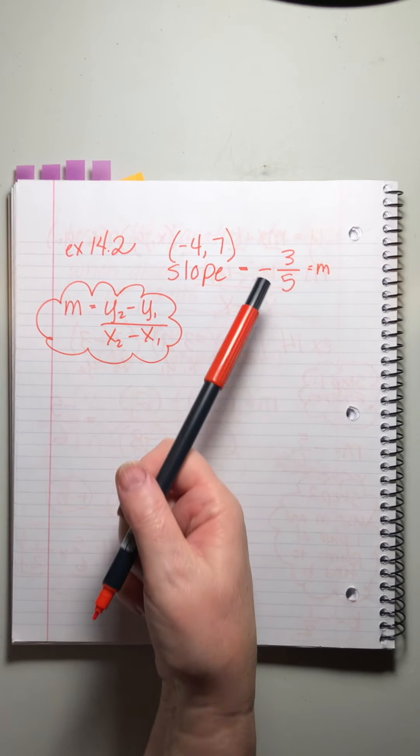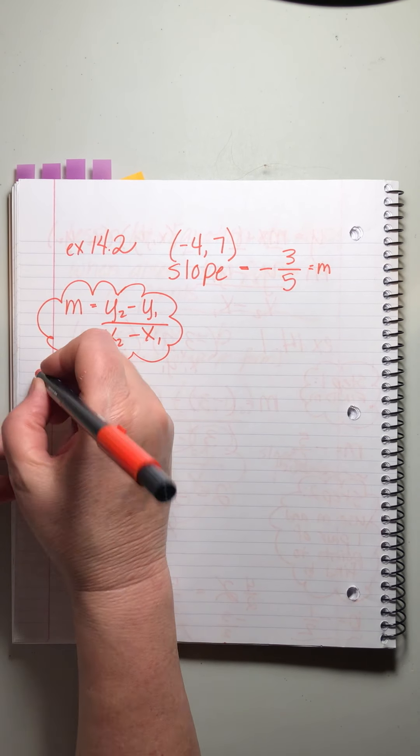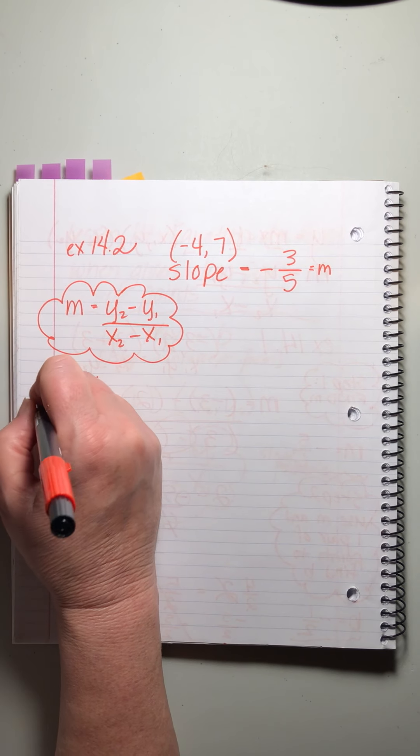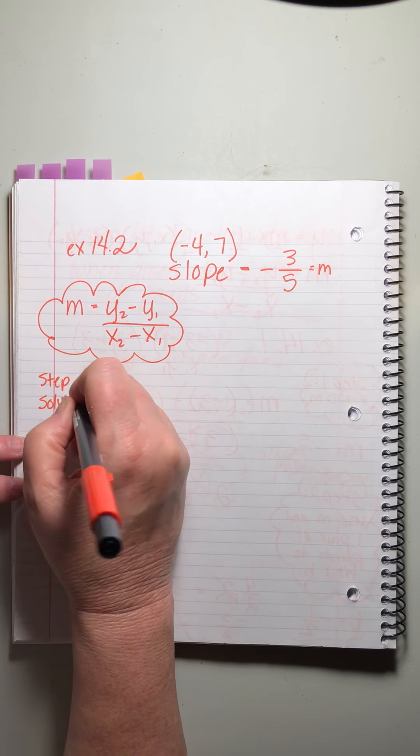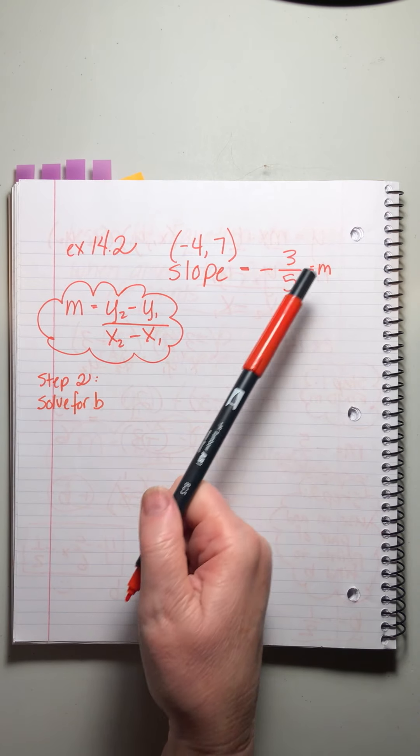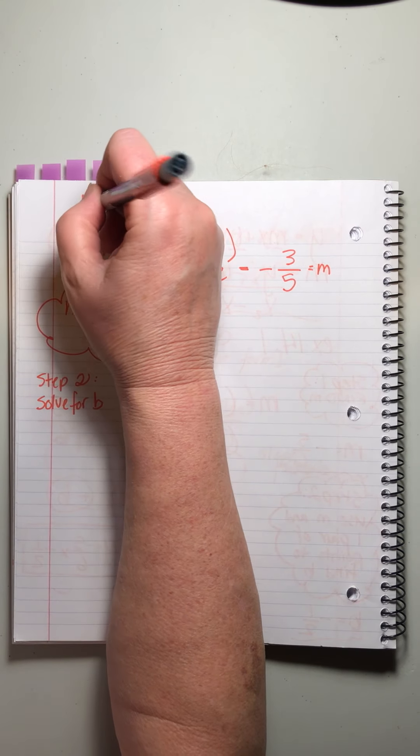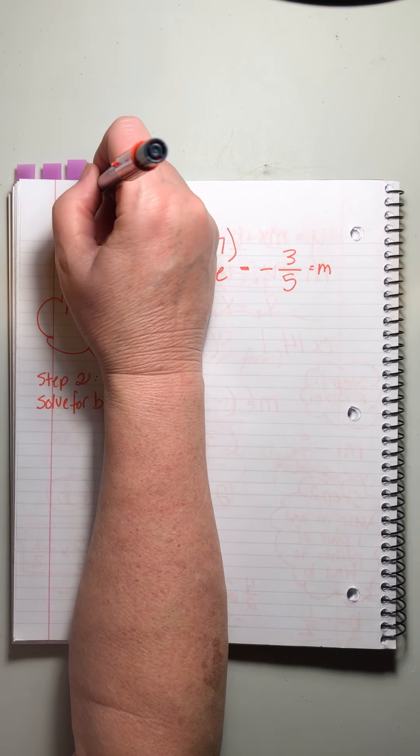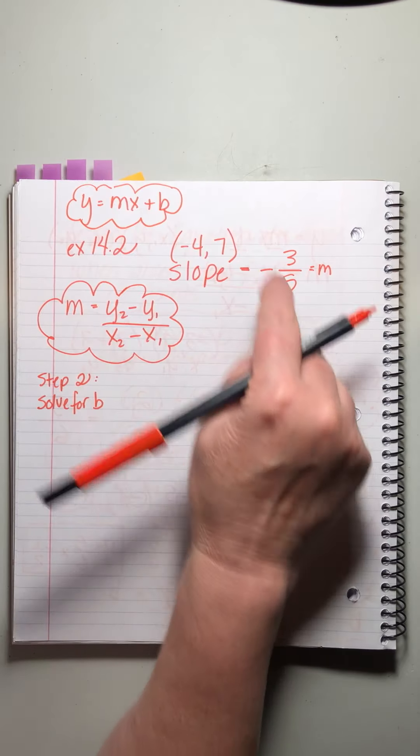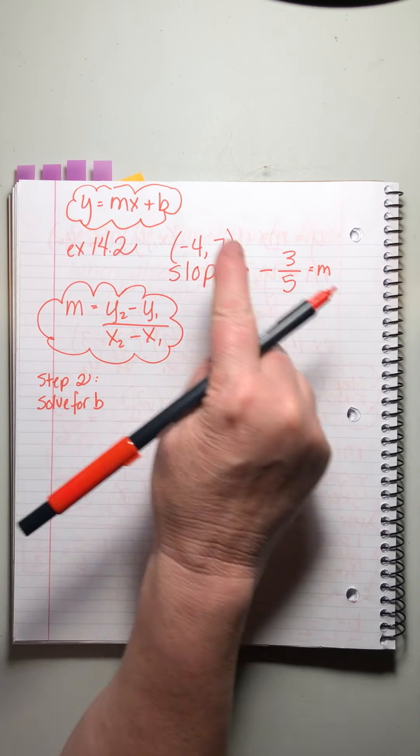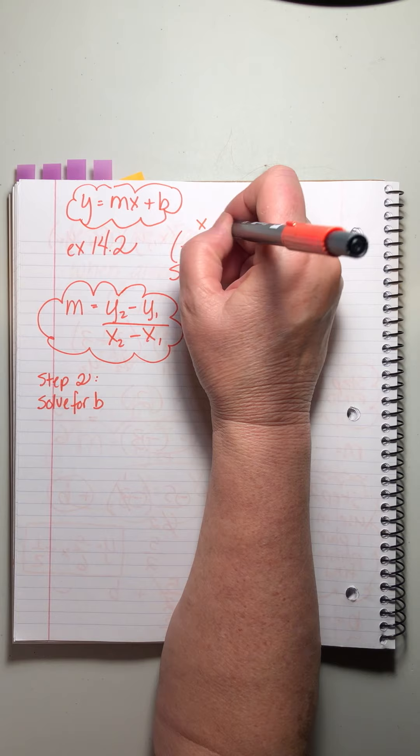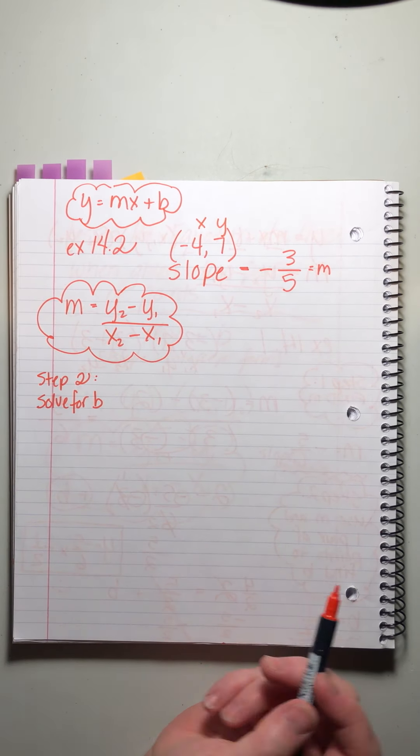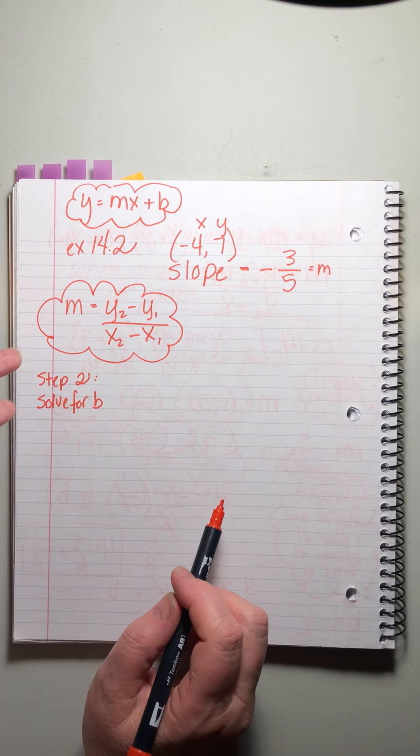Holy smokes. So now all we have to do is just the step two where we solve for B, right? And remember the way that we do that is we're going to plug, let me write this, Y equals MX plus B, right? We're going to, John told us what our slope is. So we'll put that in there and he gave us one pair of points. So that's the X and that's the Y, right? We'll plug these three in and we'll solve for B. So we only are doing half a problem. I mean, okay, right?